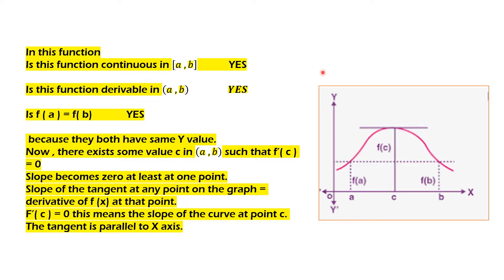Now, suppose this graph is given to you. The first step is: is this function continuous? Continuity means you can make the graph of that function without lifting the pen, and very well you can make it. So yes, the function is continuous in the closed interval [a, b]. Second point: is the function derivable in this interval? Yes, it is differentiable. Third point: is f(a) equal to f(b)? As you can clearly see, this is the a point and this is f(a), this is b and this is f(b). Yes, they are the same because they both have the same y-value.